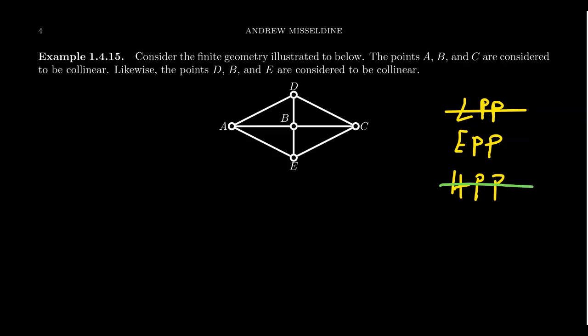What about the Euclidean parallel postulate? Because this line with this point had a unique parallel line. If I took this point, you'd also have a unique parallel line. Okay?